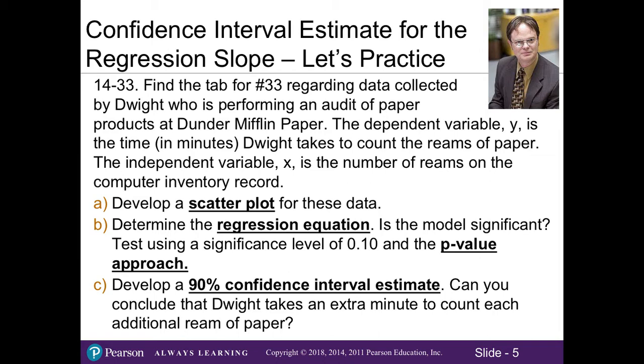So let's go ahead and do problem 33 in the textbook. I'm using the specific numbers from the text, but your numbers will look slightly different in my stat lab. You'll go ahead and use the Excel file I provided and look for the tab that says Question 33. It's regarding data collected by Dwight, who is performing an audit of paper products at Dunder Mifflin Paper. The dependent variable y is the time in minutes that Dwight takes to count the reams of paper. The independent variable x is the number of reams on the computer inventory record. Here, we're actually going to go through creating a scatter plot and a regression equation, as well as testing for significance, both of which you've already done in Section 14.2. So really, it's just practice.